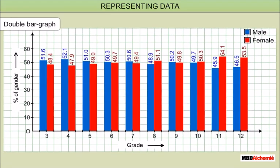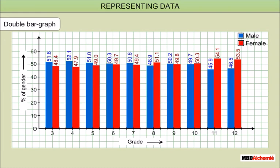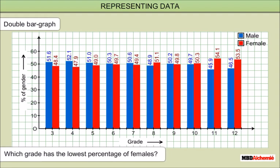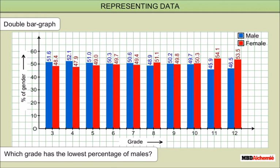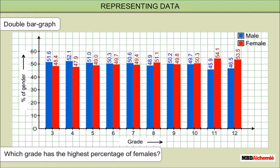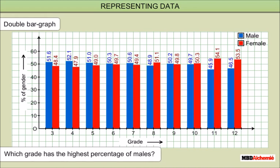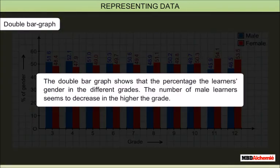Double bar graph: the following graph shows the percentage of students' gender with respect to their grades. Which grade has the lowest percentage of females? Grade 4 has the lowest percentage of females. Which grade has the lowest percentage of males? Grade 11 has the lowest percentage of males. Which grade has the highest percentage of females? Grade 12 has the highest percentage of females. Which grade has the highest percentage of males? Grade 4 has the highest percentage of males. The double bar graph shows that the number of male learners seems to decrease in the higher grades.